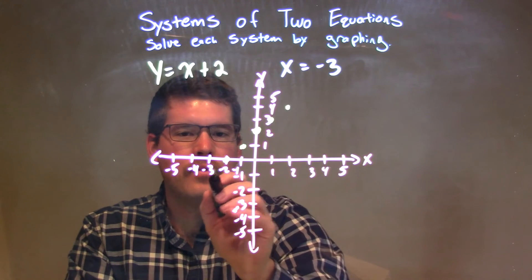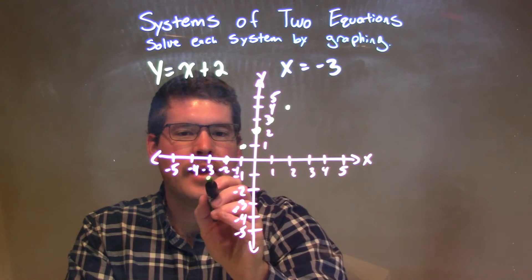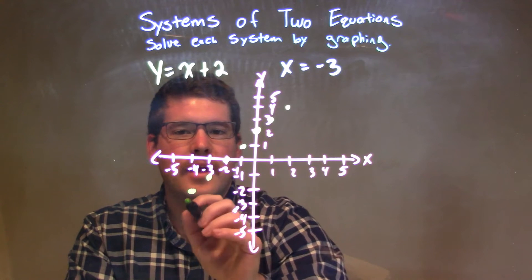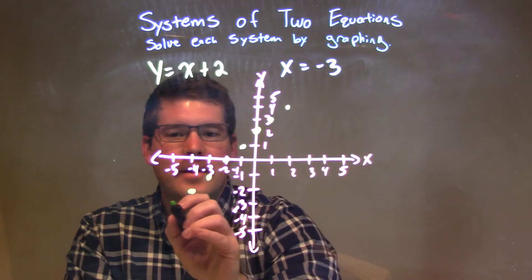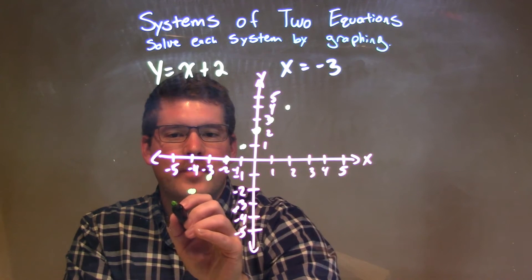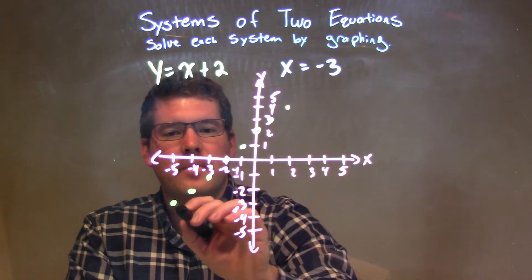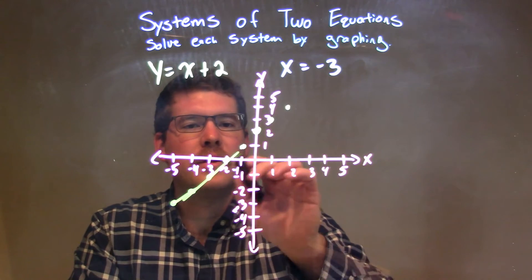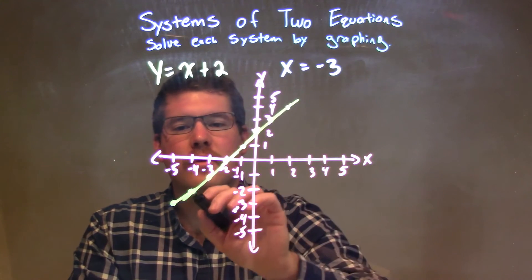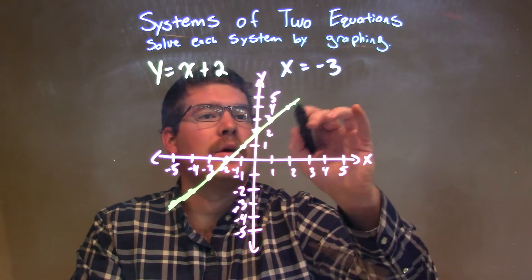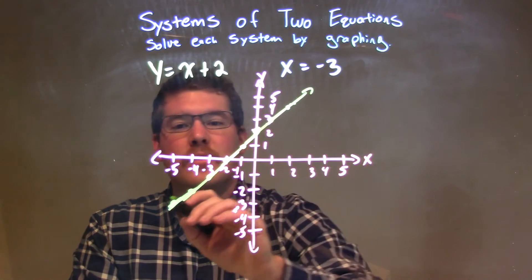Continuing down 1 over 1 to the left, we get points at negative 3, negative 1; negative 4, negative 2; and negative 5, negative 3. Now I draw the line — I'm trying to make it as straight as possible. Of course, it's better when you have a straight edge and graph paper, but we make do with what we have.